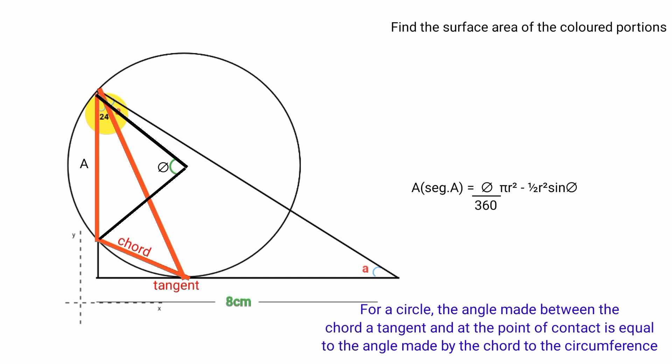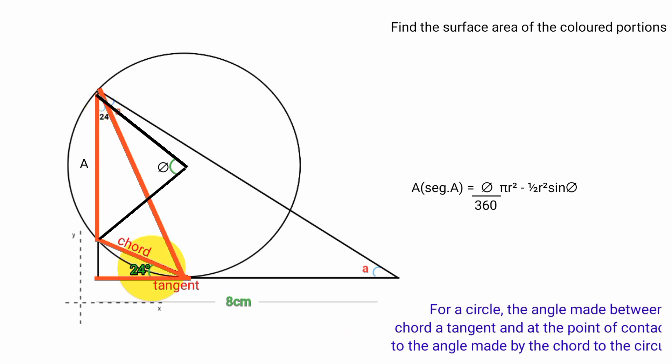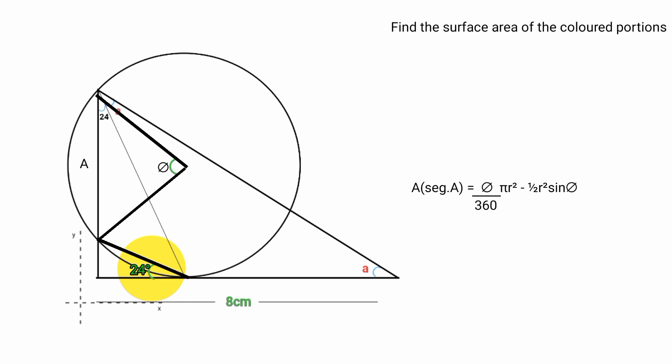This rule implies that this angle must be equal to the angle it makes with the tangent at the point of contact, so this is also 24 degrees. This line is on the x-axis and this is on the y-axis, and x and y axes on a directional plane are always perpendicular to each other.